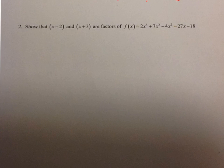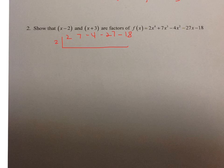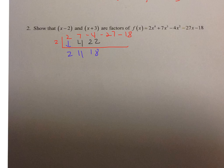Now let's try a higher-power polynomial. Show that x minus 2 and x plus 3 are factors of 2x to the 4th plus 7x cubed minus 4x squared minus 27x minus 18. Let's start with x minus 2 — so positive 2 on the outside. Set it up: 2, 7, negative 4, negative 27, and negative 18. Bring down the 2. 2 times 2 is 4. 7 plus 4 is 11. 2 times 11 is 22. Negative 4 plus 22 is positive 18. 2 times 18 is 36. Negative 27 plus 36 is 9. 2 times 9 is 18. Negative 18 plus 18 is 0. Therefore, x minus 2 is a factor.